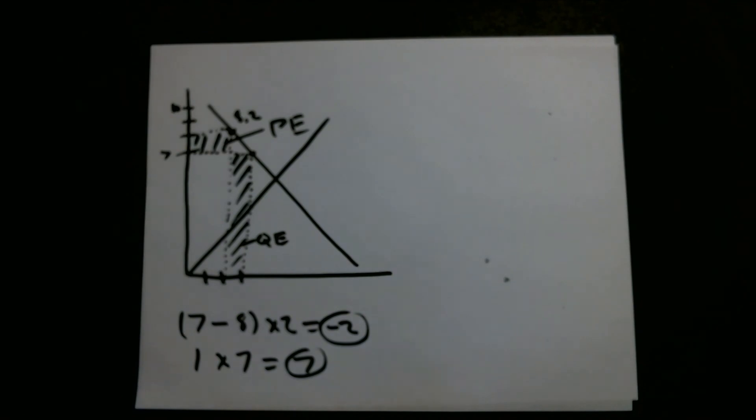So then we're going to go back to the problem. And C says quantity effect will dominate the price effect and total revenue will increase — which is correct. So we'll circle that.